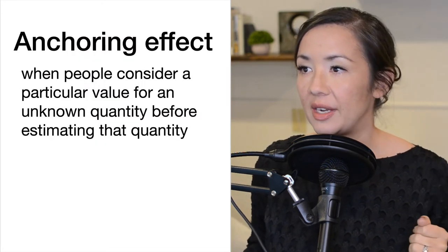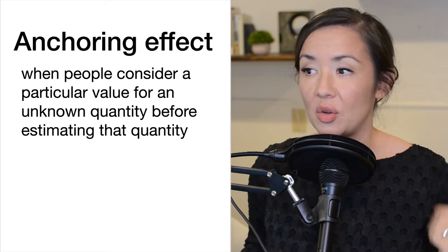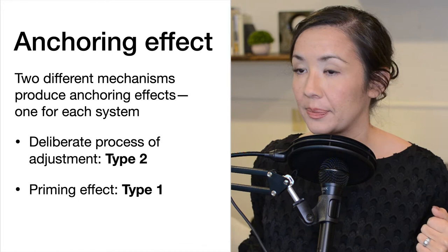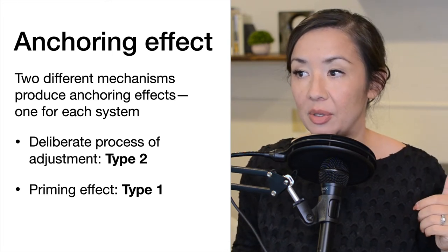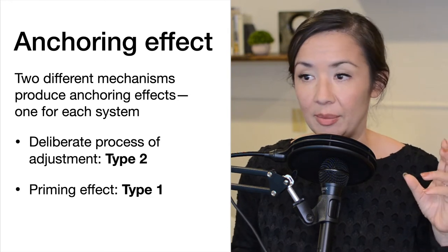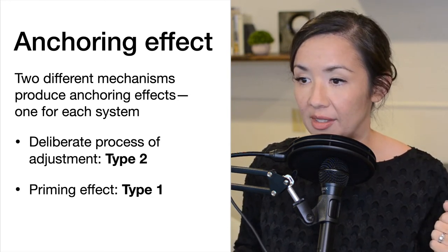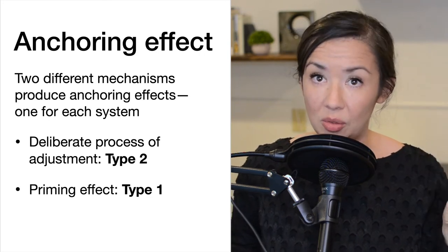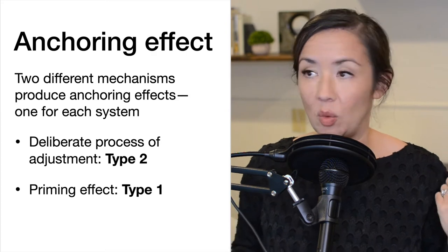This is the effect of an anchor, where you're given a number that influences your estimate of value, and it can be entirely unrelated to the actual value of a product. The anchoring effect is when people consider a particular value for an unknown quantity before estimating that quantity. There are two different mechanisms that produce the anchoring effect — one for each system. The first is a deliberate process of adjustment, associated with Type 2 processing, and the other is priming, associated with Type 1.